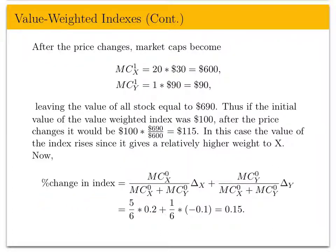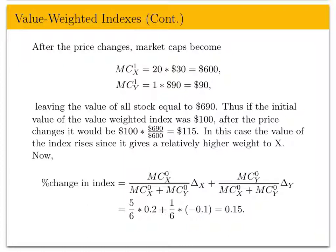Mathematically, the change in the value-weighted index weights the percentage change in X by X's market cap over total market cap, and the percentage change in Y by Y's market cap over total market cap. You put five-sixths into X (returning +20%) and one-sixth into Y (returning negatively), which bodes well relative to the price-weighted portfolio where you put much less wealth in the high-returning asset.